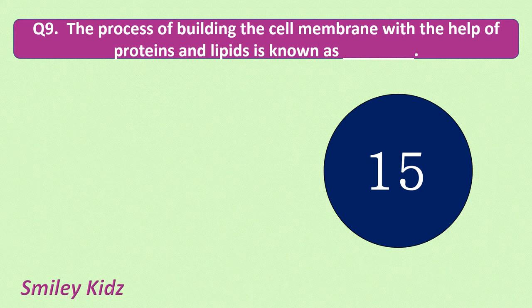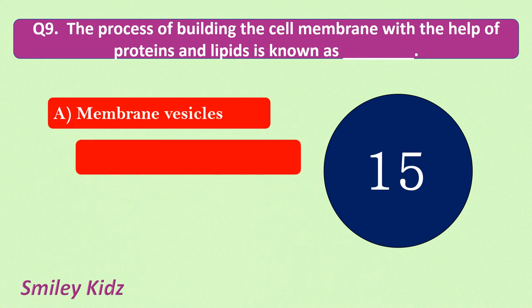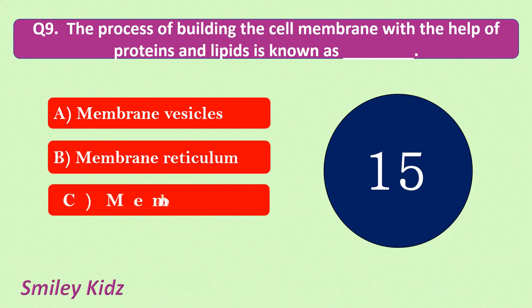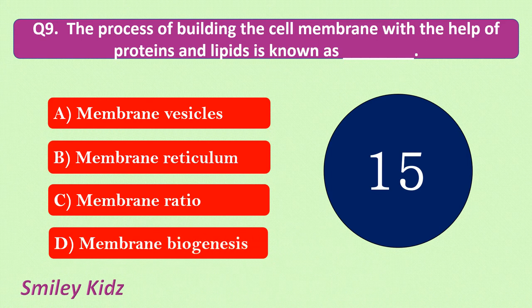Question number 9. The process of building the cell membrane with the help of proteins and lipids is known as. Your options are: membrane vesicles, membrane reticulum, membrane ratio, membrane biogenesis. Your time starts now.